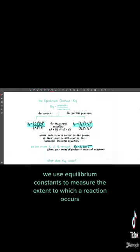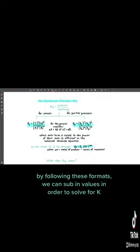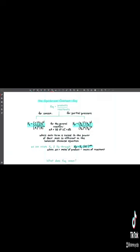We use equilibrium constants to measure the extent to which a reaction occurs. By following these formats, we can sub in values in order to solve for K.